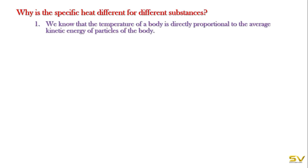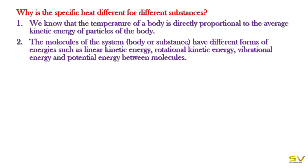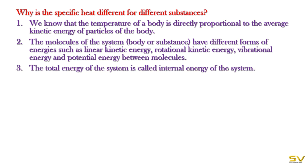We know that temperature of a body is directly proportional to the average kinetic energy of the particles — if temperature increases, kinetic energy also increases. The molecules of a system have different forms of energy: linear kinetic energy, rotational kinetic energy, vibrational energy, and potential energy. The total of all these forms of energy is called the internal energy of the system.